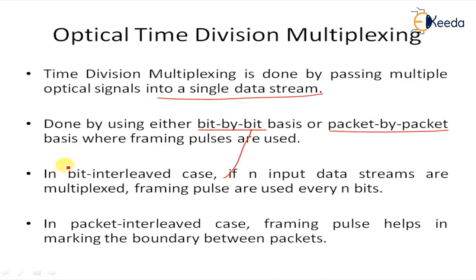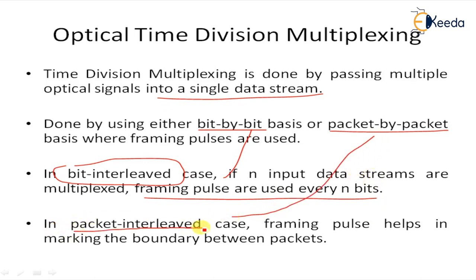In the bit-by-bit, or one-bit interleaved case, if n input data streams are multiplexed, framing pulses are used every n bits. In the packet-by-packet, or packet interleaved case, framing pulses help in marking the boundary between packets. The framing pulses are very useful for demultiplexing individual packets from a multiplexed stream. Very short pulses — much shorter than the bit period of each multiplexed stream — must be used in an OTDM system. A periodic train of such short pulses can be generated using a mode-locked laser.